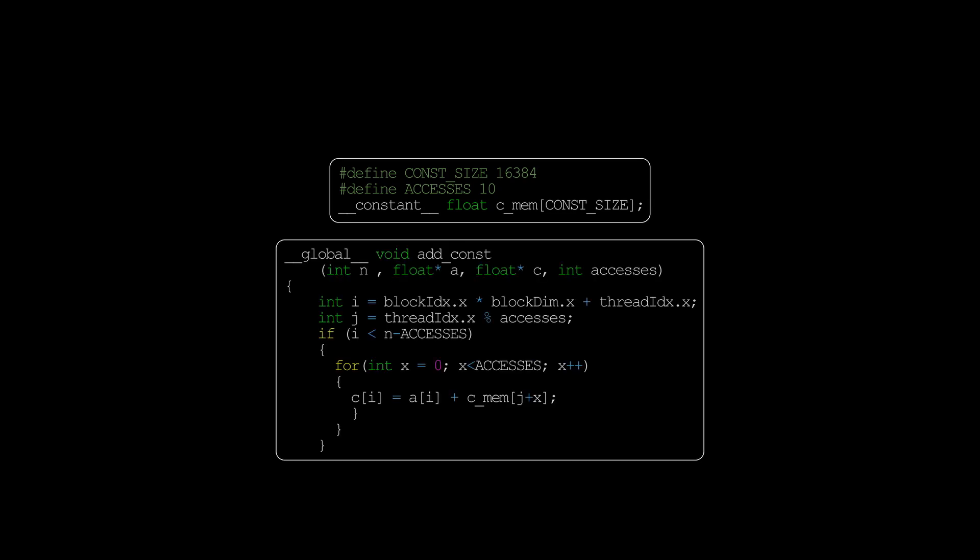Let's look at and benchmark an example of this. We are going to work with a code that uses the maximum amount of constant memory that we can. And the kernel just adds two numbers together, one in global and one in constant memory, and it does that 10 times. The reason for that is that I've found that one access is just too short and tends to give very noisy results.